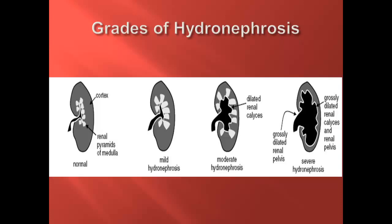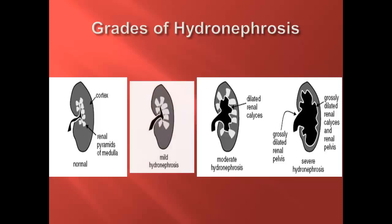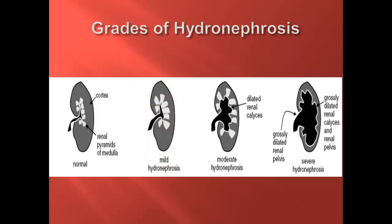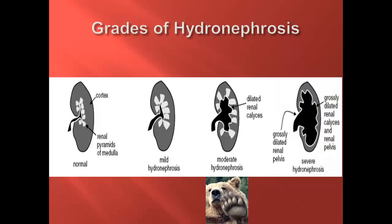Studies have demonstrated a correlation between the degree of hydronephrosis and stone size, and most algorithms for the emergency department evaluation and management of renal colic incorporate the degree of hydro into the decision-making pathway. Mild hydro is defined as enlargement of calyces with preservation of renal papilla. Moderate hydro is characterized by rounding of calyces with obliteration of renal papilla and blunting of the pyramids. This appearance is often described as a glove-like splaying of the sinus akin to a bear claw. Severe hydro is defined as calyceal ballooning with cortical thinning.